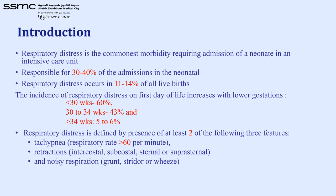Respiratory distress is defined by the presence of at least three of the following features. Tachypnea means fast breathing — anything above 60 breaths per minute is tachypnea in a newborn, with the normal rate being 40 to 60. Retractions can be intercostal, subcostal, sternal, or suprasternal. Noisy respiration includes grunting, stridor, or wheezing.